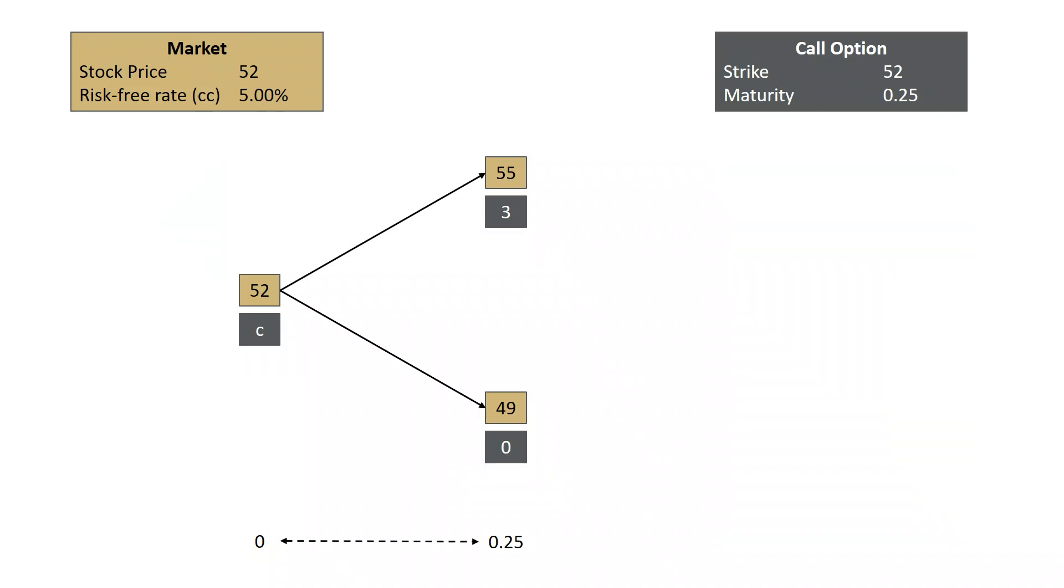Let's take the same starting point. We've got our market going from 52 up to 55 or 52 down to 49. We've got our call option with a strike of 52 and a maturity of three months. We know our call option is either worth $3 if the stock goes up or nothing if the stock goes down.